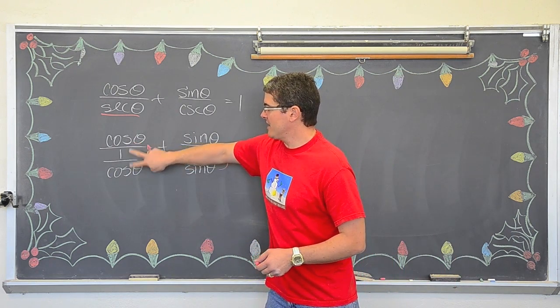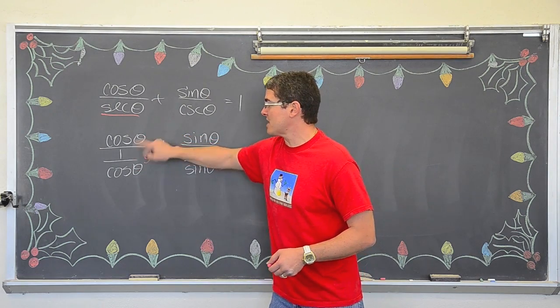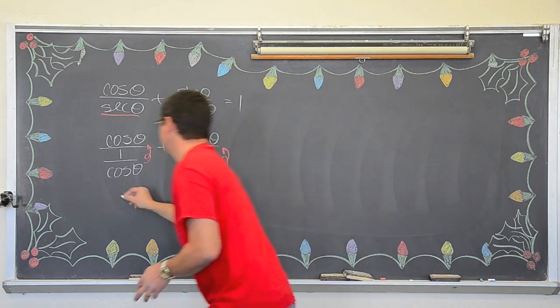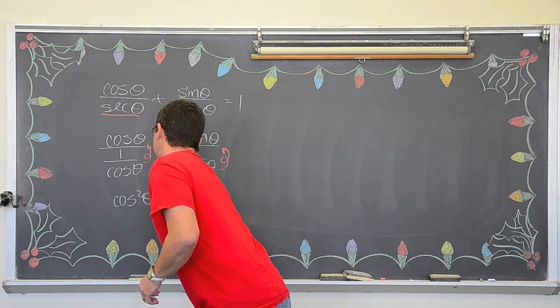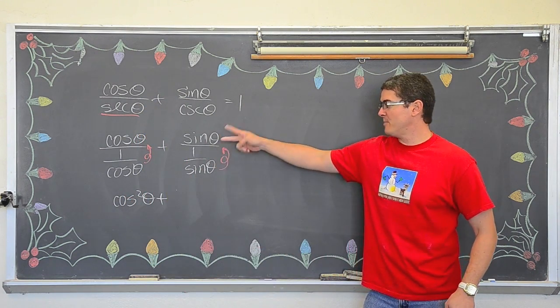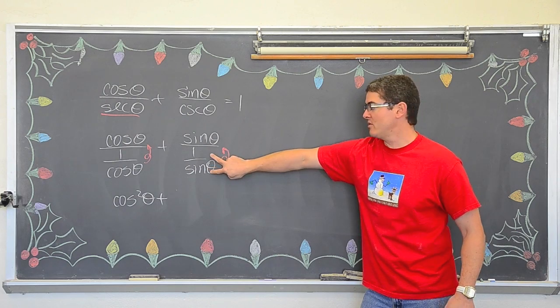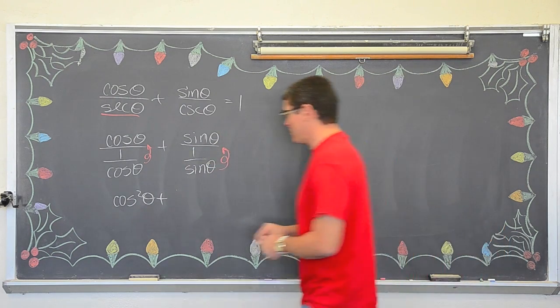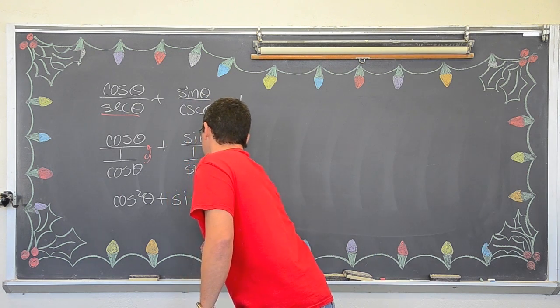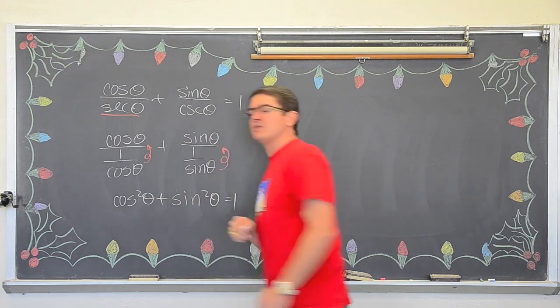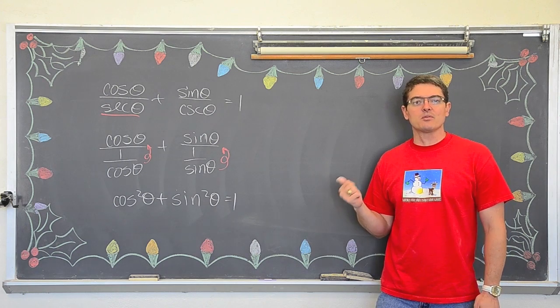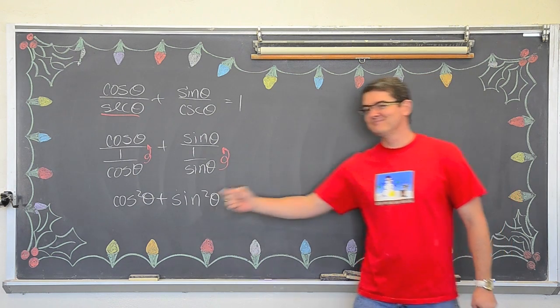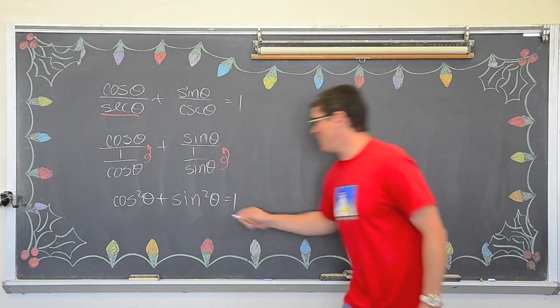So cosine of theta times, this bottom flips up, cosine of theta times cosine is going to be cosine squared plus, again this bottom is going to flip up. You are dividing by a fraction so you multiply by the reciprocal. So sine times sine is sine squared. If you don't know your Pythagorean identities yet, go look at those notes you just copied or the back of the book. What is the first Pythagorean identity? Sine squared plus cosine squared equals one.